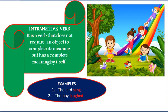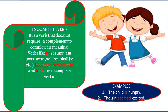Now let's come to intransitive verbs. An intransitive verb does not require an object to complete its meaning — it has a complete meaning by itself. Like 'the bird sang' or 'he ate.' These are intransitive verbs when used without an object.